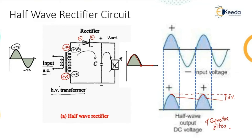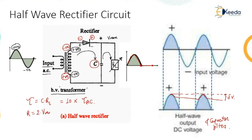The value of capacitor C chosen is such that the time constant, represented as tau = C × R_L, is at least 10 times that of the time period of the AC supply. The rectifier valve must have a peak inverse voltage rating of at least two times V_max.